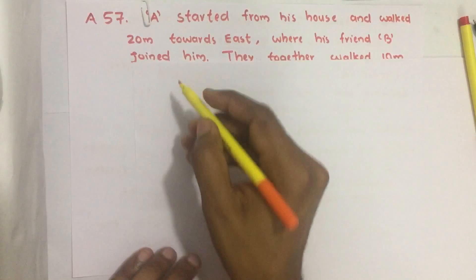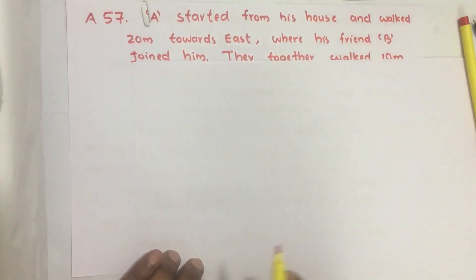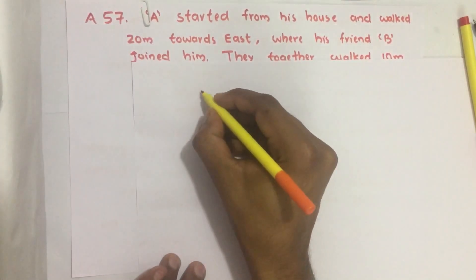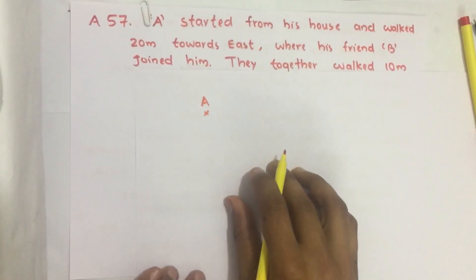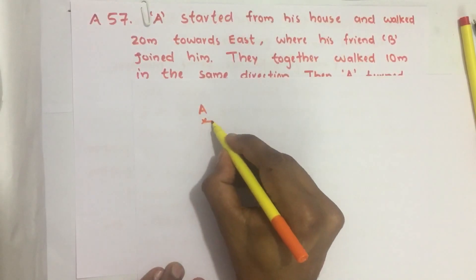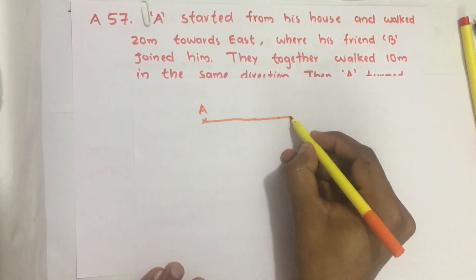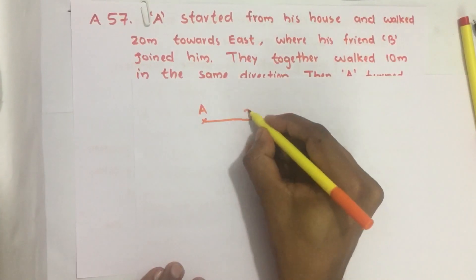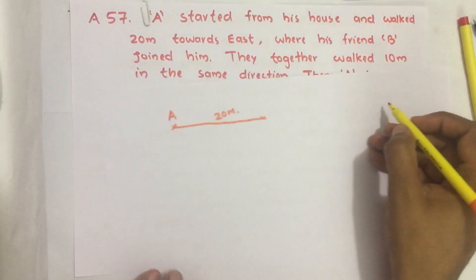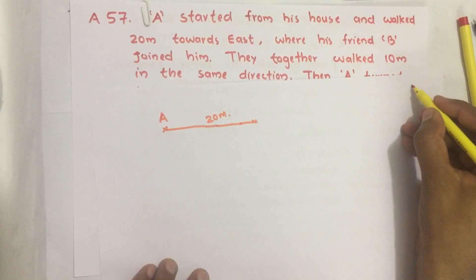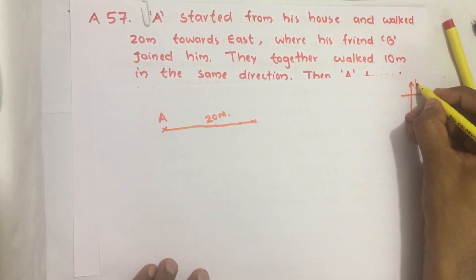Here A and B, there are two people they are going to their respective offices. So here A is starting from his house and he walked how much? He walked 20 meters towards east. First we know which direction is east. For that we just draw here the compass direction.